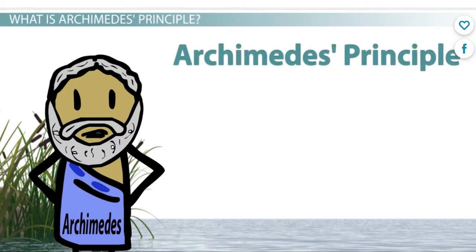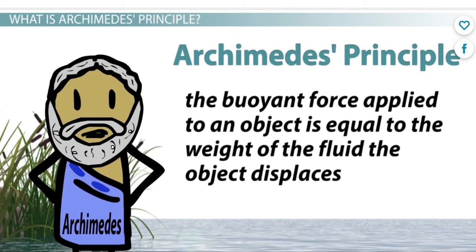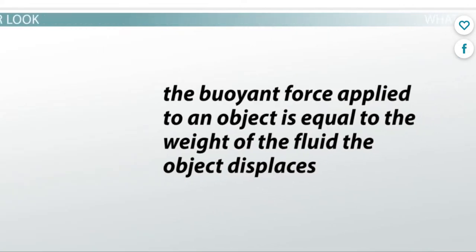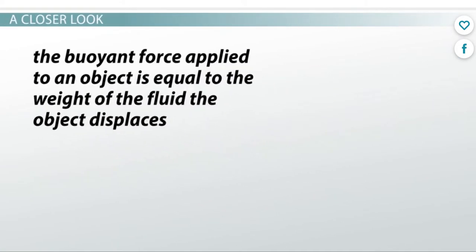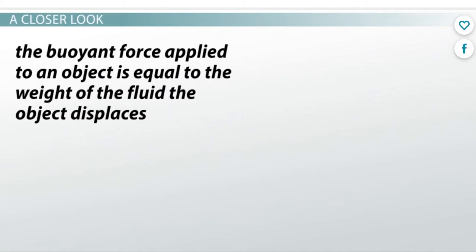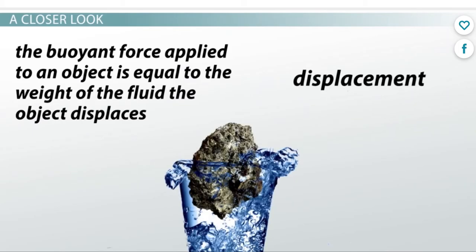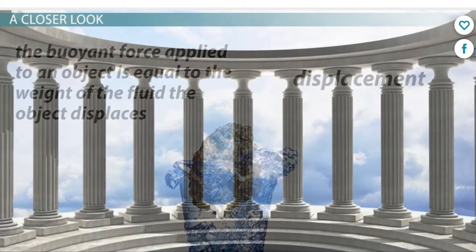Archimedes' principle states that the buoyant force applied to an object is equal to the weight of the fluid the object displaces. Let's take a closer look at this definition — first we need to understand displacement.